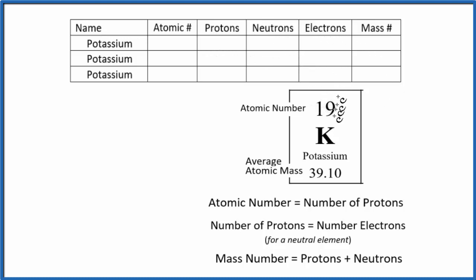The first thing we know is when we look at the periodic table, the atomic number for potassium is 19. So all isotopes of potassium will be 19. That atomic number kind of defines potassium.